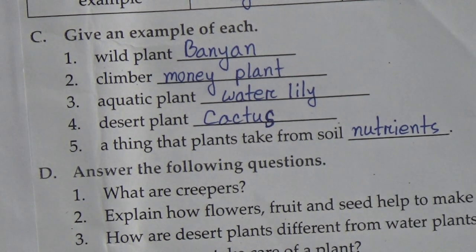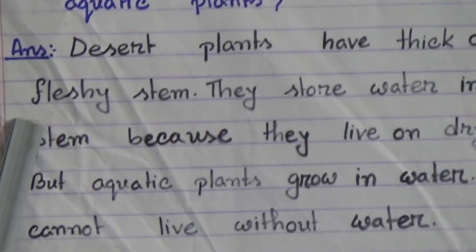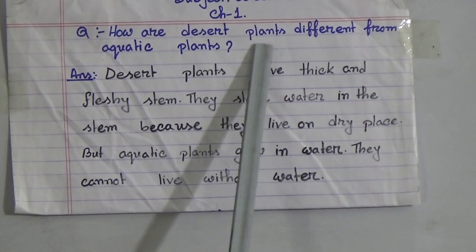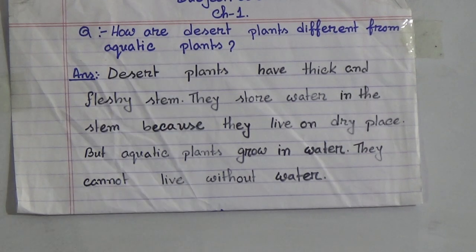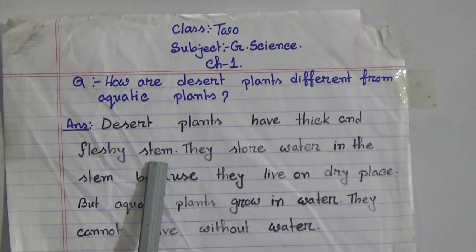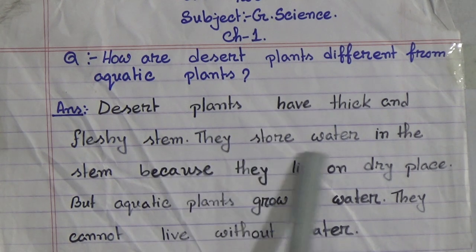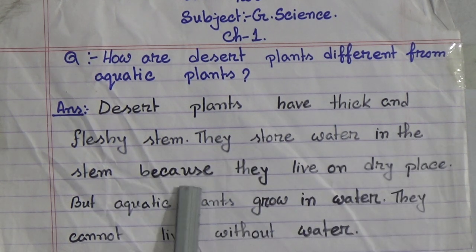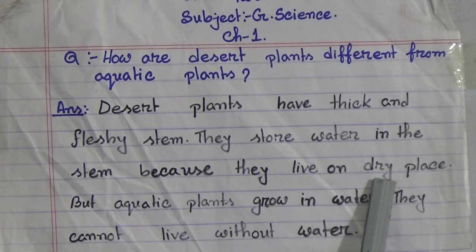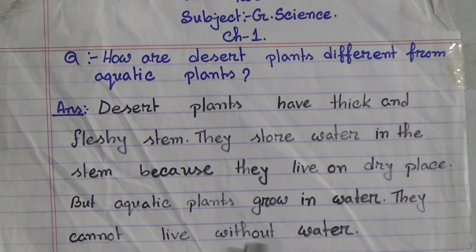Now we will do a question and answer for this chapter. Question: How are desert plants different from aquatic plants? Answer: Desert plants have thick and fleshy stems. They store water in the stem because they live on dry land. But aquatic plants grow in water — they cannot live without water.